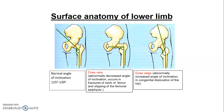That's the angle between the femur neck and the femur shaft. We have coxa vara and coxa valga. Coxa vara is when the neck-shaft angle is decreased, occurring in fractures of the neck of the femur and slipped femoral epiphysis. Coxa valga is when the angle is increased, especially in congenital dislocation of the hip.